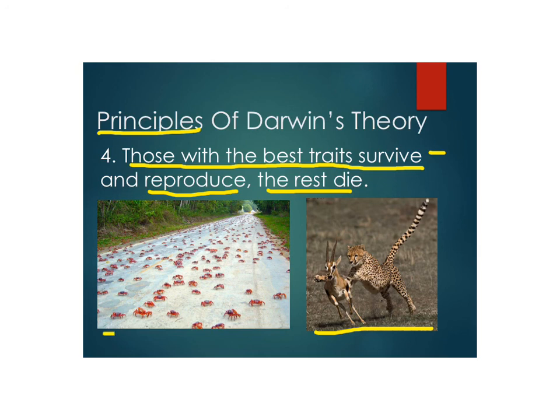Here's another example — the little red crabs on Christmas Island. They all hatch out and migrate to the sea at the same time, and the roads get completely covered in these crabs. Not every single one will make it — some will get eaten by a seagull, some will get run over by a car. Those that make it to the sea are the strongest and the best at this point in time. They're the ones that survive, have babies, and pass on their traits.